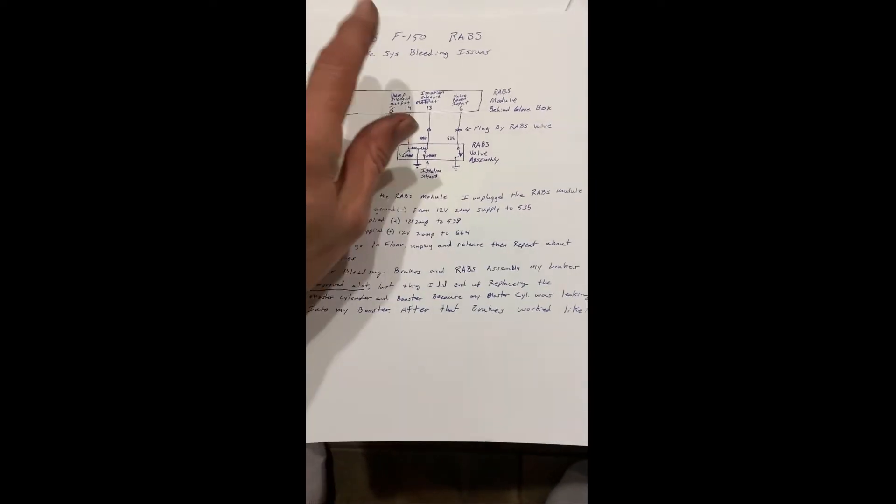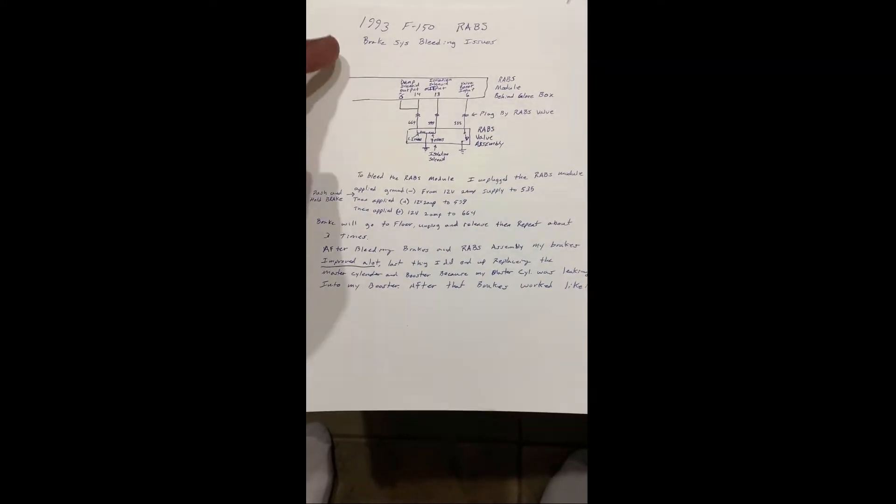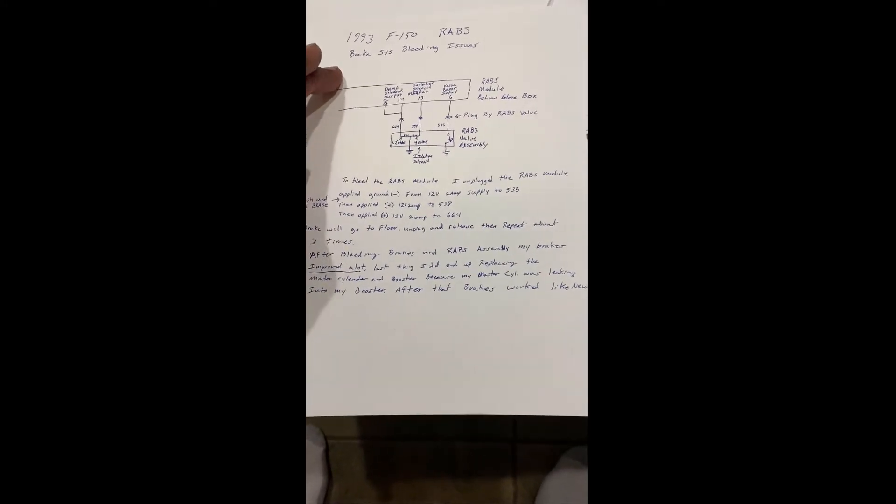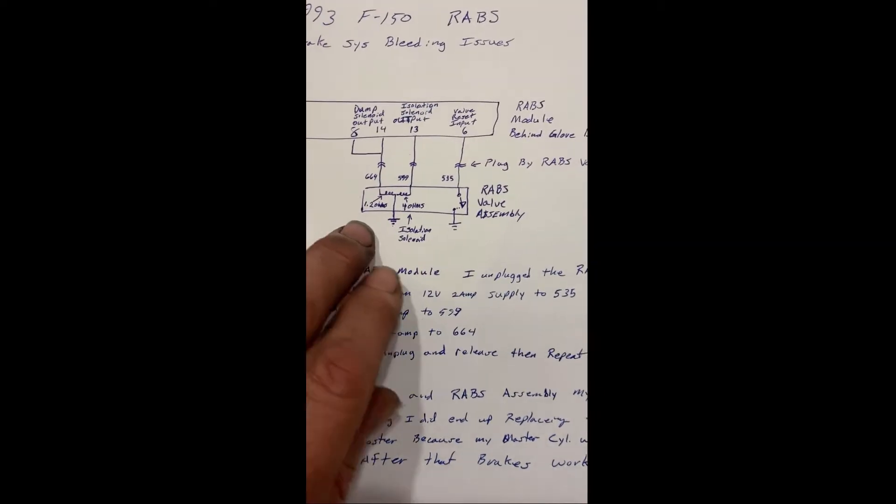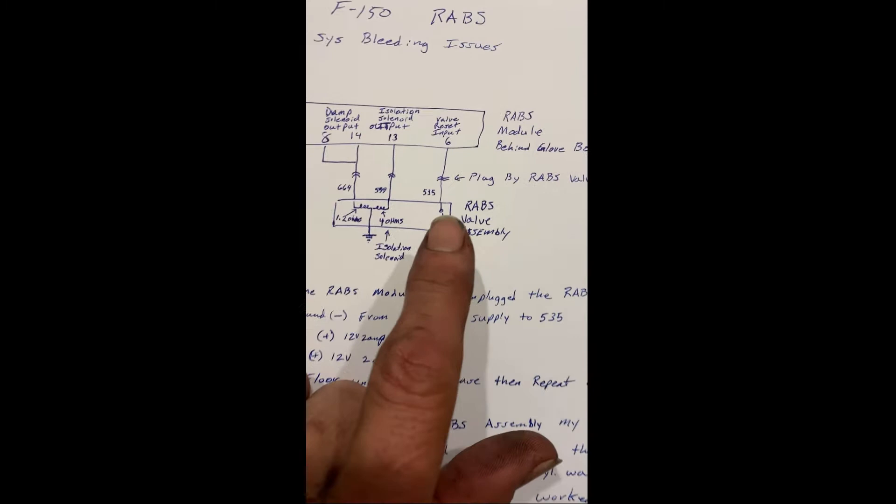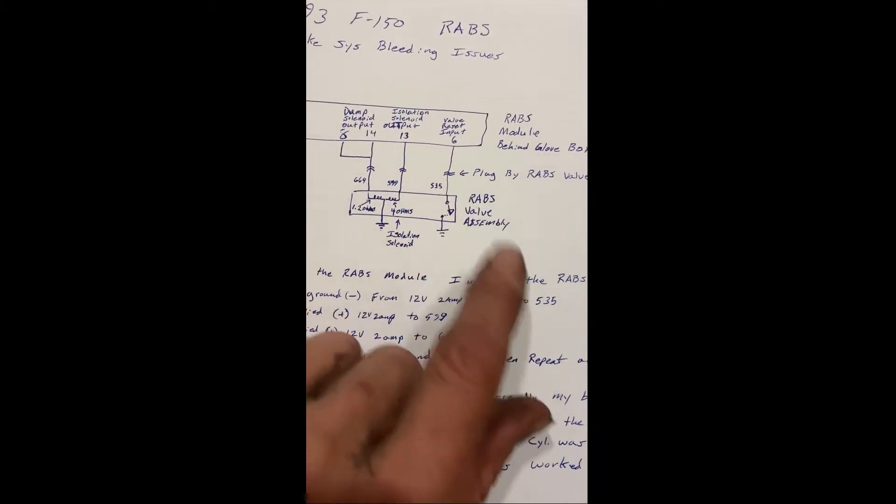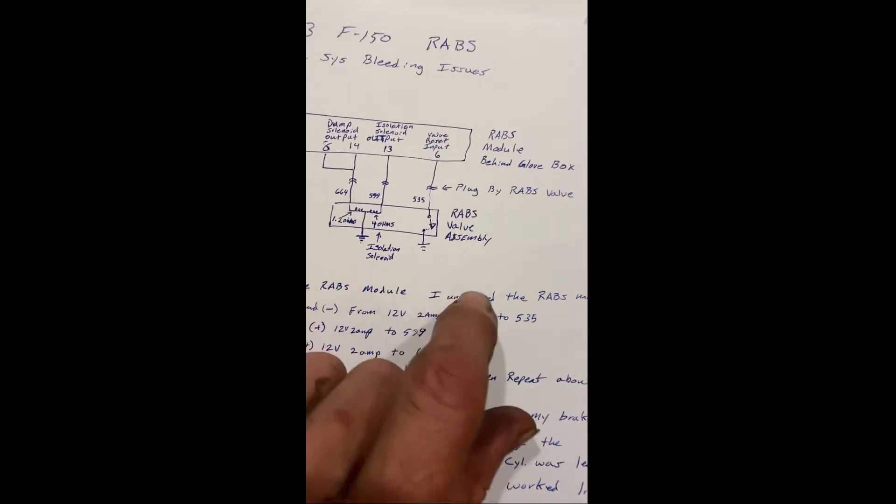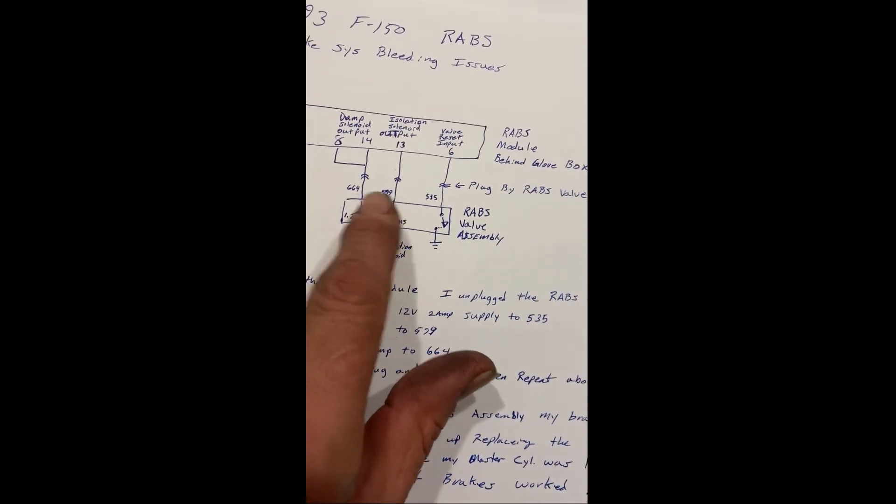This might not be quite definitive, but here we go. So 93 F-150 XLT, doesn't matter, it's got the rear anti-lock brake system in it. The video I showed, or will show, I made a tool. There's a three prong outlet on this thing and one of them was hooked to a ground, and then the other ones I was just tapping back and forth between these two.